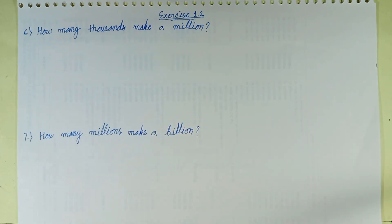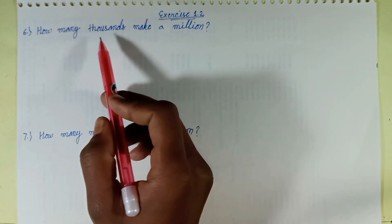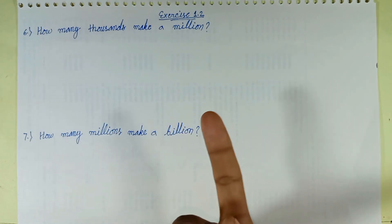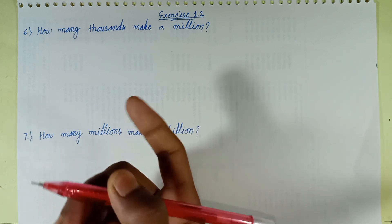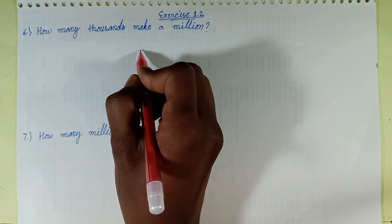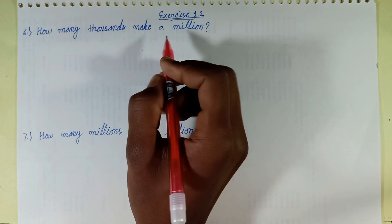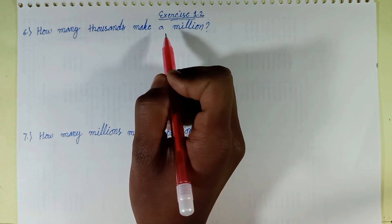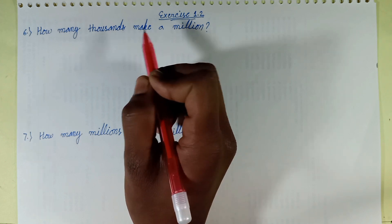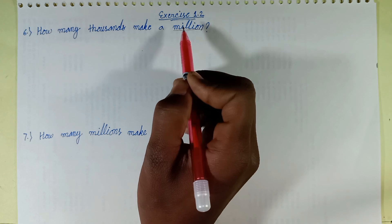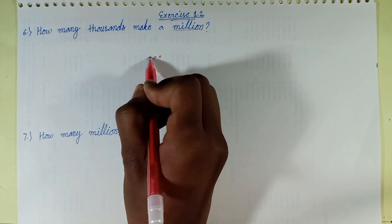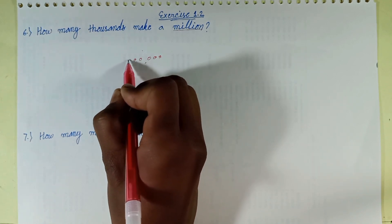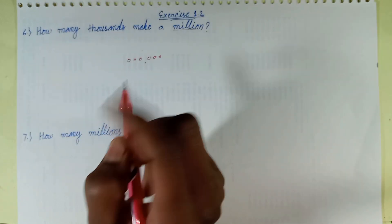First of all, let's look at how many thousands are in a million. We write one million in groups of three digits: the ones period, the thousands period, and the millions period. In the international system of numeration, the place values are: ones, tens, hundreds, thousands, ten thousands, hundred thousands, and millions.